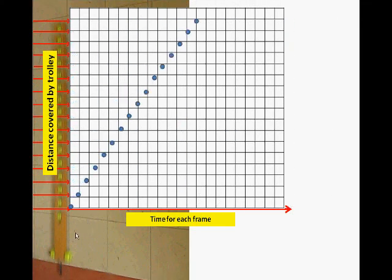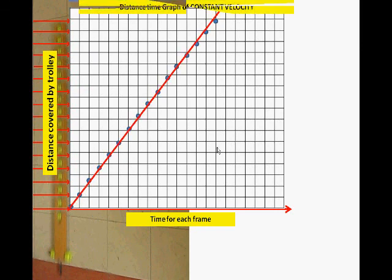I can plot out the distance travelled at each point, and now we can see that the distance time graph for a constant velocity object gives us a nice straight line.